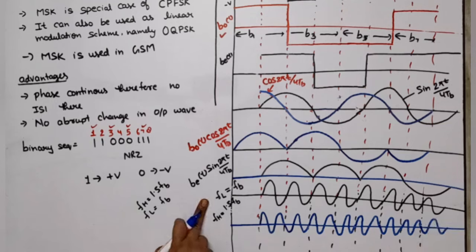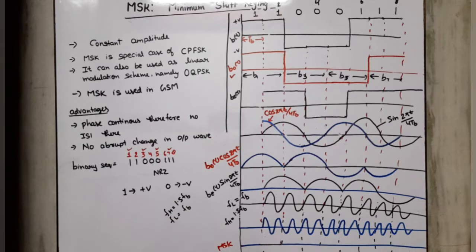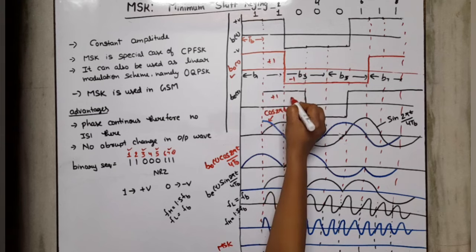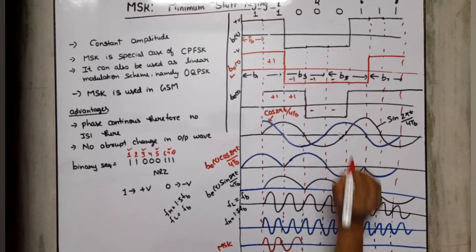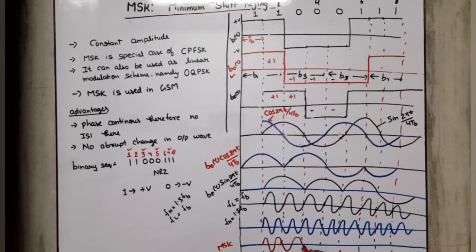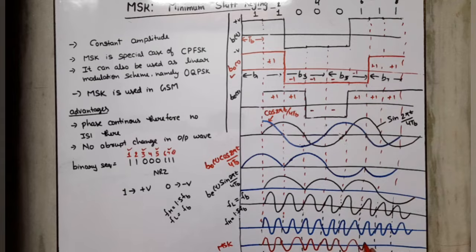To get the final MSK waveform output, we compare the phase of the odd and even multiplied pulses. If both pulses have the same phase, we use the high frequency F_H; if the phases are different, we use the low frequency F_L. Comparing: both plus-1 means same phase → F_H; minus-1 and plus-1 means different phase → F_L; both minus means same phase → F_H; minus and plus means different phase → F_L; both plus means same phase → F_H. This gives us the final MSK waveform.